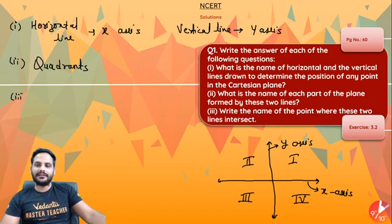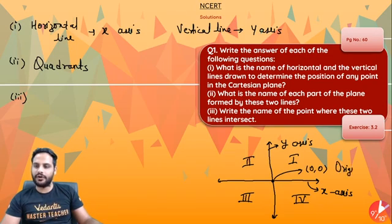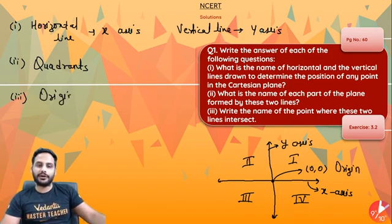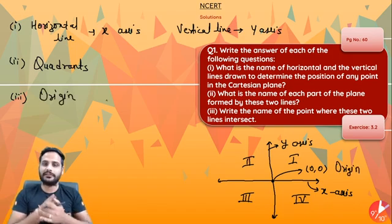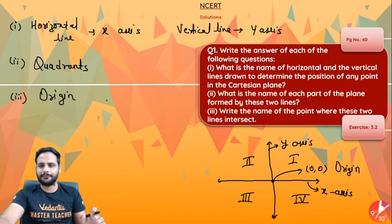Third one: write the name of the point where these two lines intersect. Wherever these two lines intersect, that point has coordinates (0, 0) and it is called the origin. Origin is the intersection point of both the lines. So the answer is origin — as simple as that.